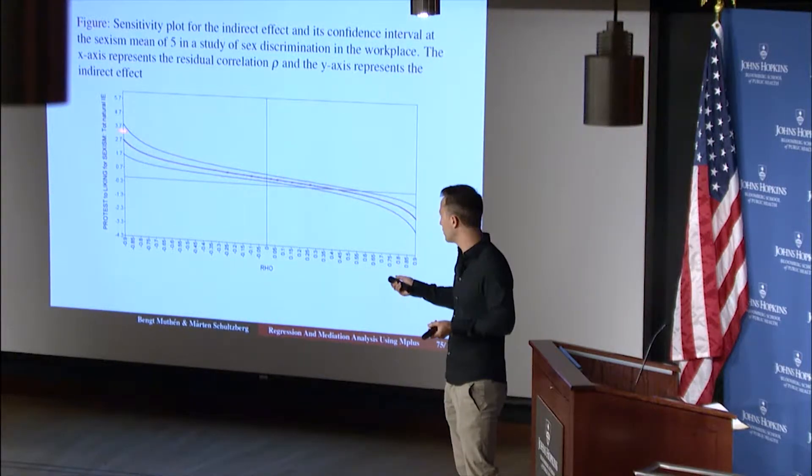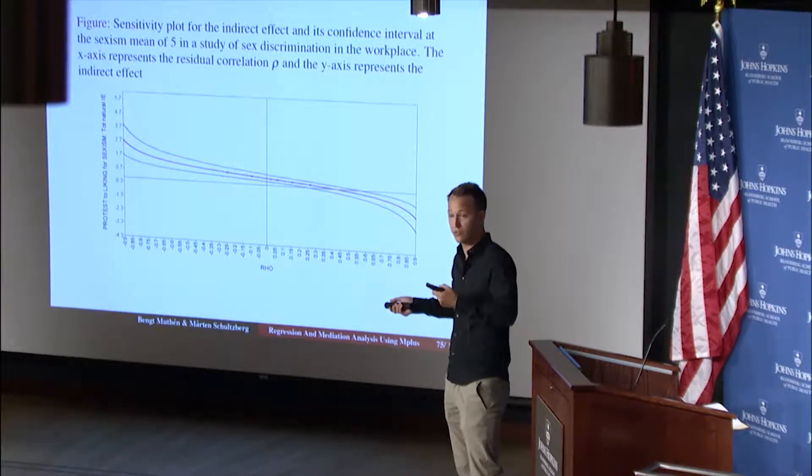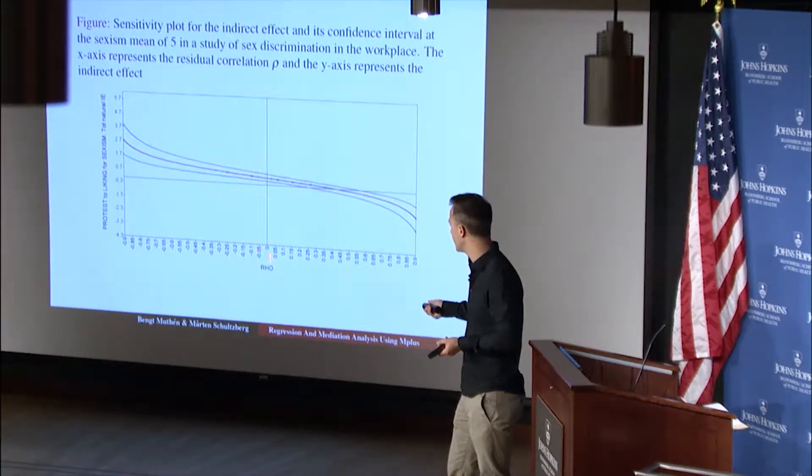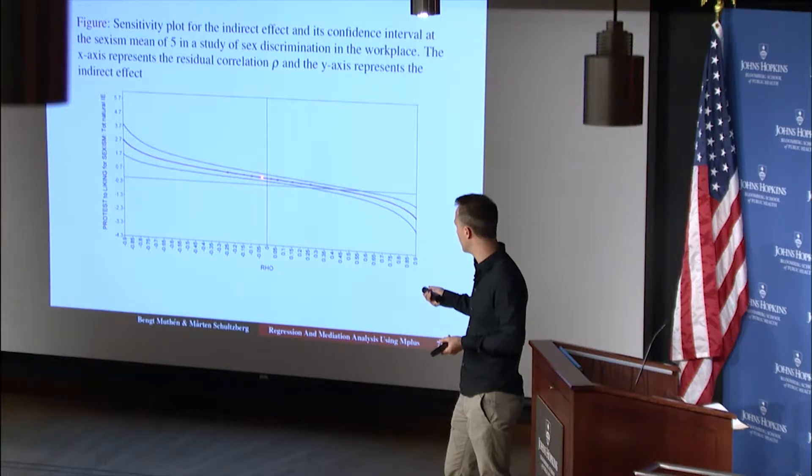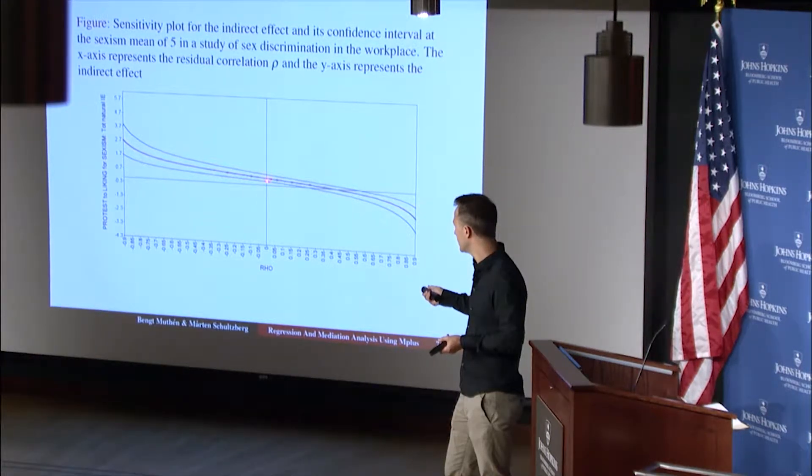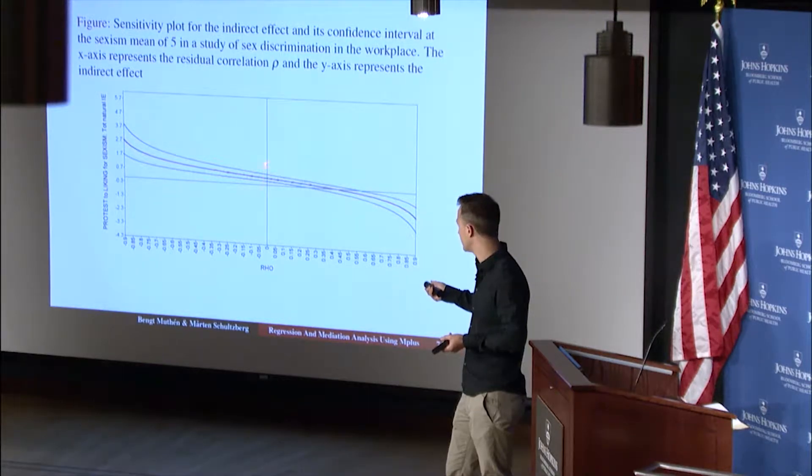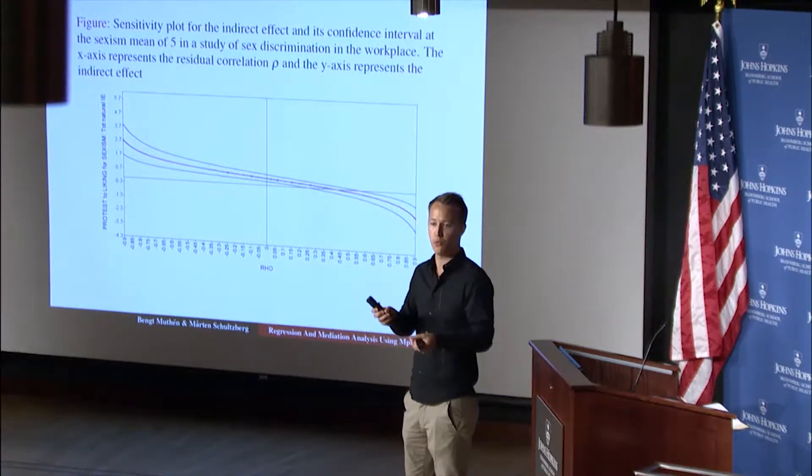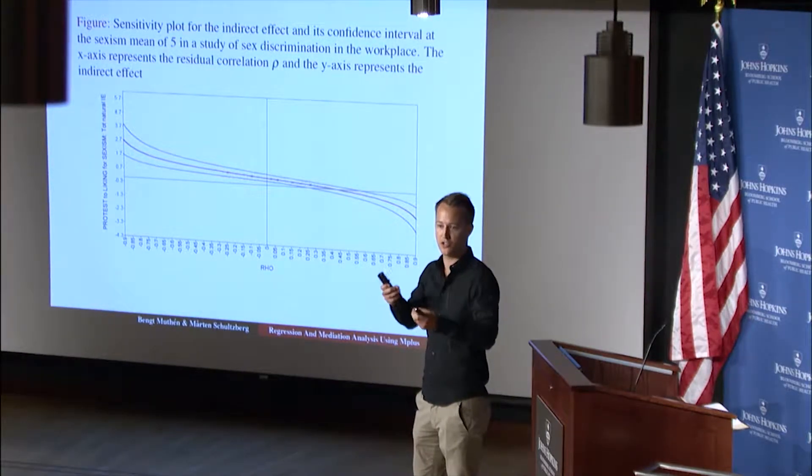But some of this value is the correct correlation. We don't know it. So some of the effect estimate, which is the point estimate in the middle here, is the true value, so to speak. The question is, we have assumed zero. So what the model would give us is the zero value. So this is the value we get. It's a significant effect because the confidence interval does not cover zero. So the question is, what if we're wrong about this assumption? What if we have an unmeasured confounder that causes correlation?